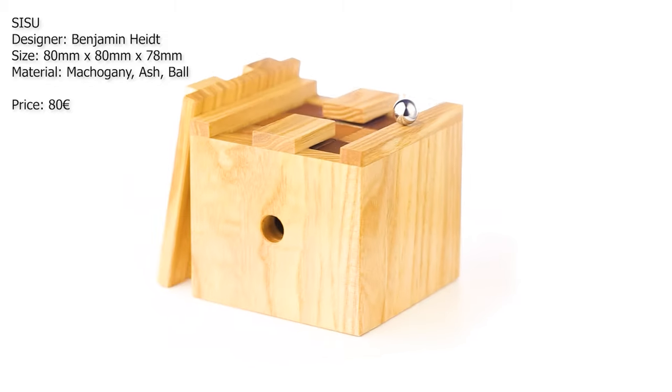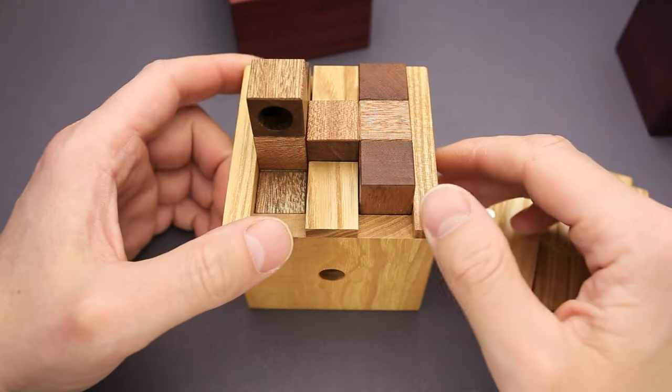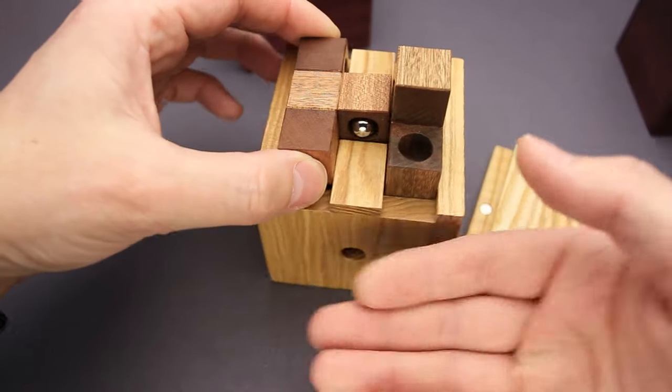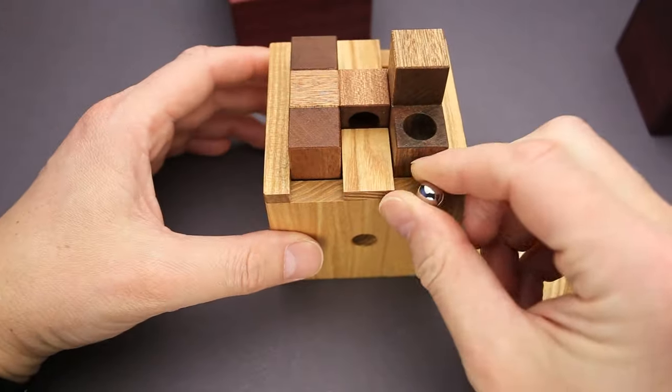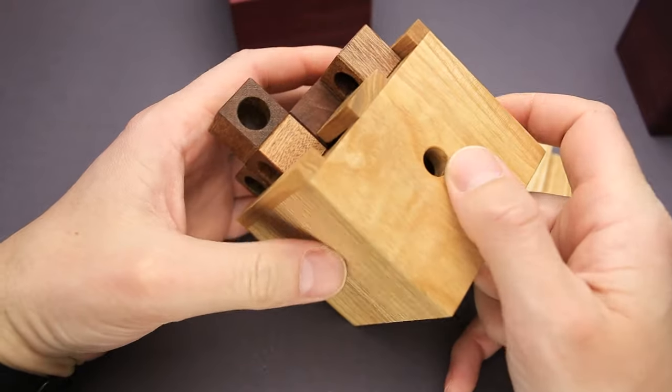The name of the next puzzle is Sisu. It was also designed by Benjamin Hyde. And this puzzle was made using two different types of wood, mahogany and ash. There is also a small metal ball included with the puzzle. And as you can see, there is a cutout on this side of the frame and on this side of the frame.